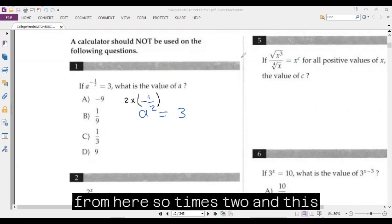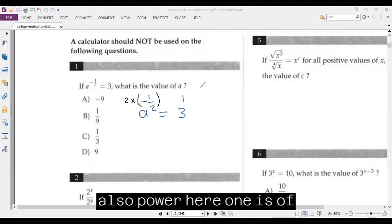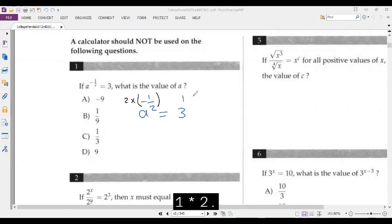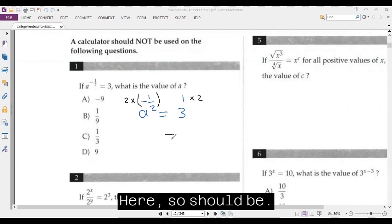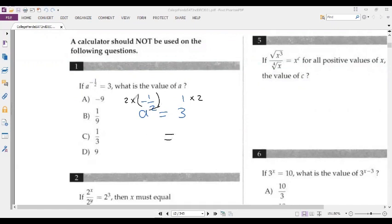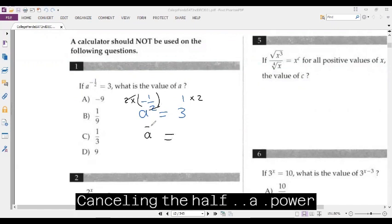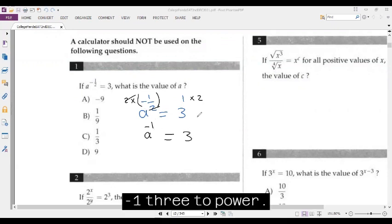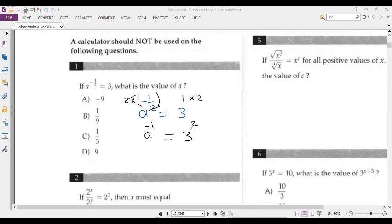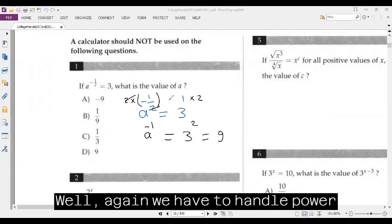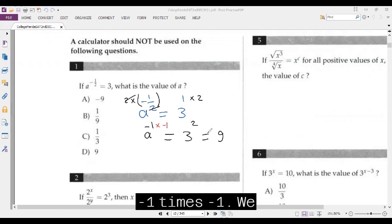So we raise both sides to the power two. This cancels the half, giving us A to the power negative one equals three to the power two, which is nine. So again, we have to handle the power negative one.